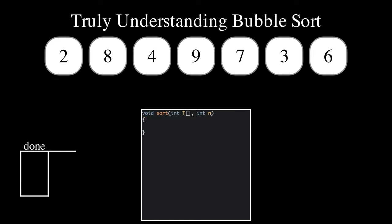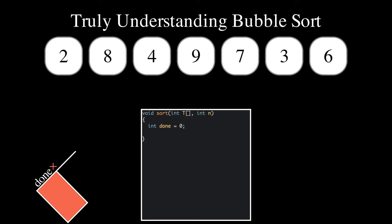We use a flag called done that indicates whether the algorithm is finished or if more passes are needed. Initially, we must do at least a pass, so we initialize the flag to zero. We loop for as long as the flag indicates that we should do so.